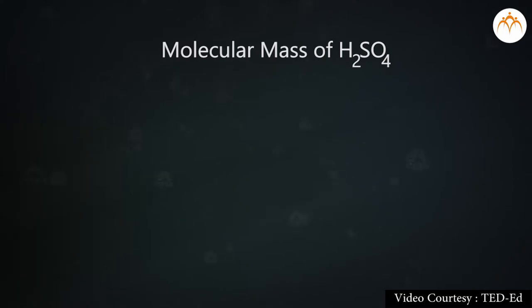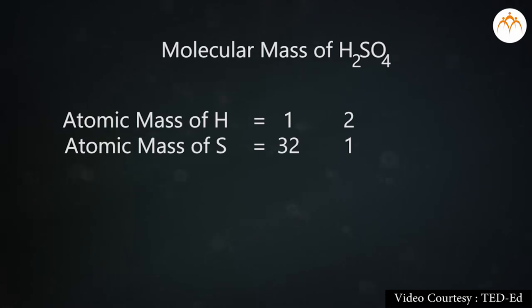Molecular mass of H2SO4: atomic mass of hydrogen is 1, number of hydrogen atoms present are 2, atomic mass of sulfur is 32, number of sulfur atoms present is 1, atomic mass of oxygen is 16, number of oxygen atoms present are 4.